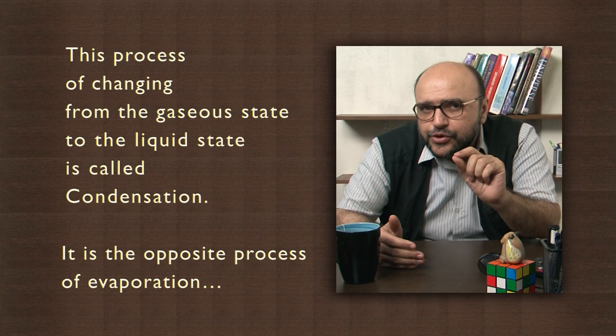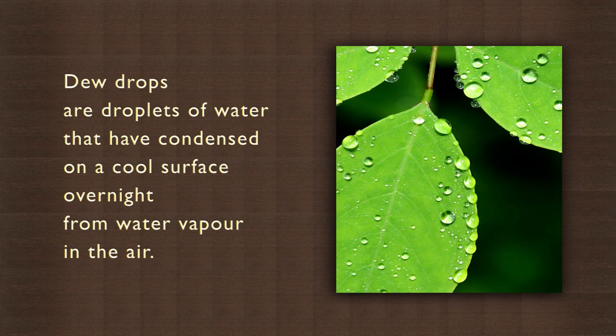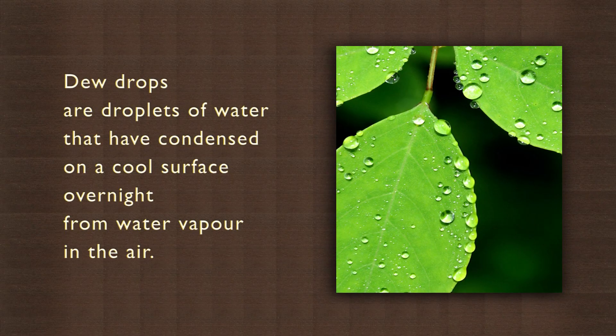Now can you explain how dewdrops form? Dewdrops are droplets of water that have condensed on a cool leaf surface from water vapor in the air. Can you think of any other examples of condensation?